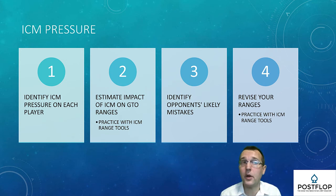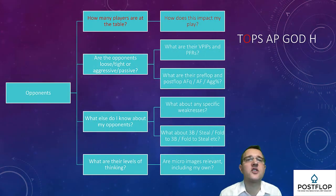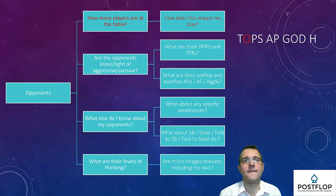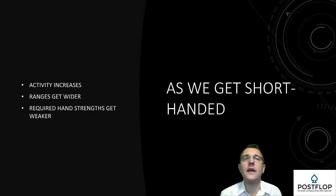This might be something you do for just one opponent — someone sat immediately to your right with eight big blinds. You might consider in advance what his likely shoving range should be and what range you can choose for calling. Now let's focus on the four questions about our opponents, starting with how many there are. You should know how your pre-flop ranges alter as the table gets shorter-handed. The fewer players there are, the more often you are on the blinds and the more necessary it is to be active. Typical ranges get exponentially wider as the action gets shorter-handed.